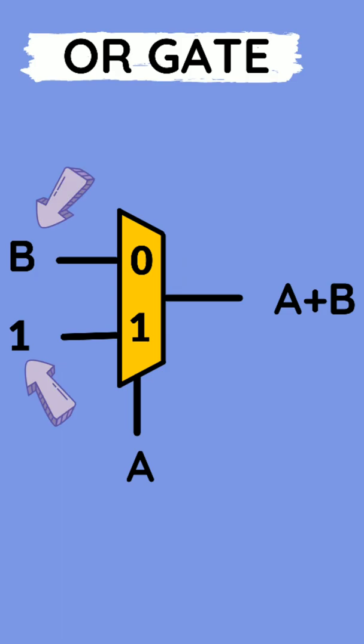For OR gate, we have one and B as inputs and A as select line and output will be A plus B.